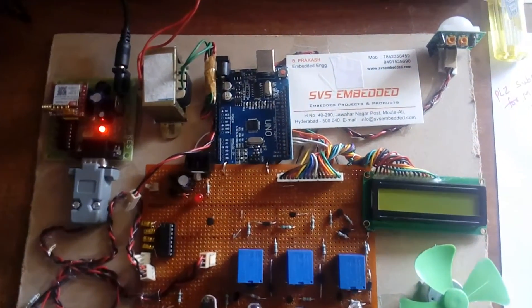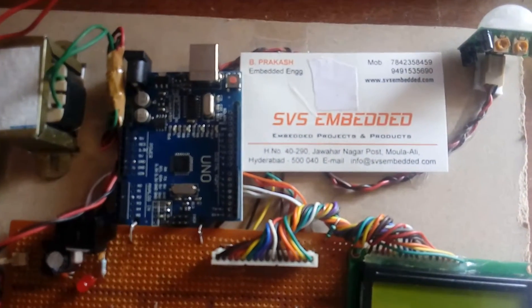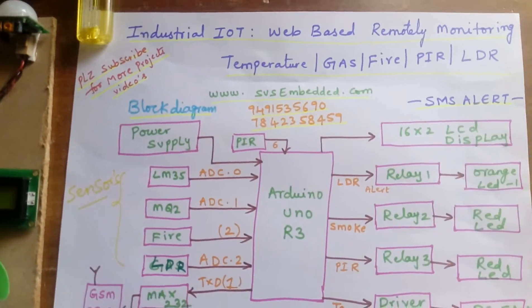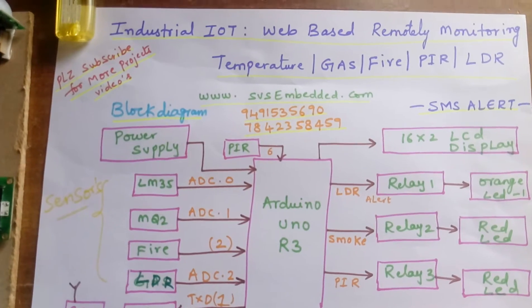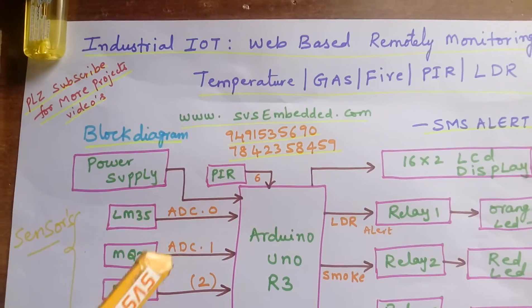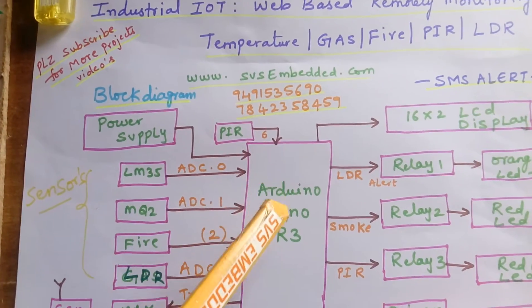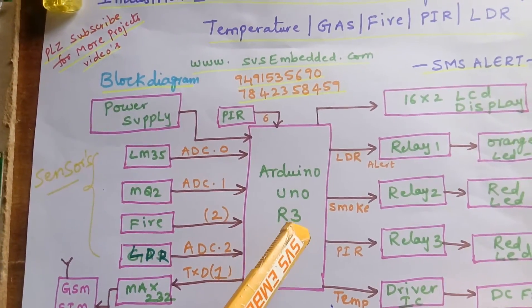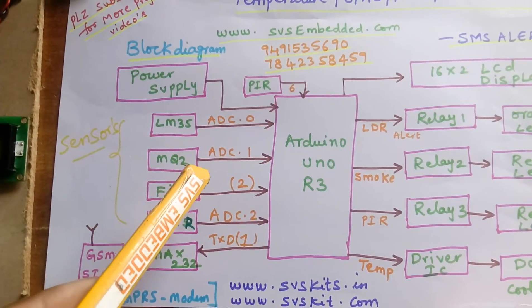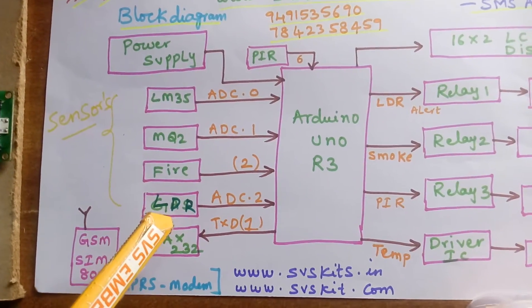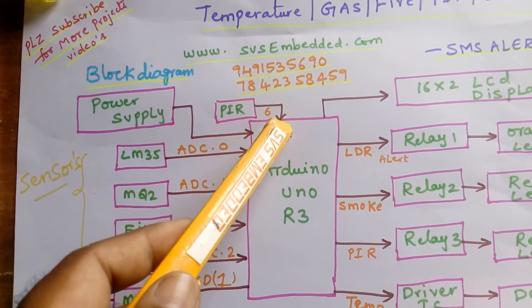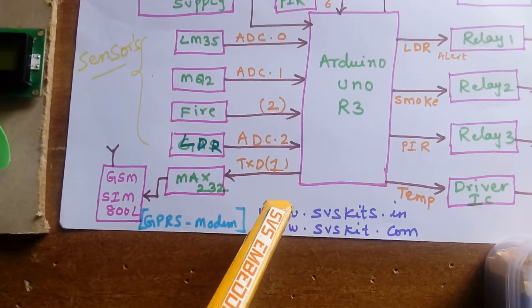Hi, we are from SVS Embedded. The project title is Industrial IoT Web-Based Remote Monitoring: Temperature Alert, Smoke, Fire, PIR, and LDR. We are using an Arduino UNO R3 and five sensors: LM35 temperature sensor, MQ2 gas/smoke sensor, PIR sensor, LDR sensor, and fire sensor.